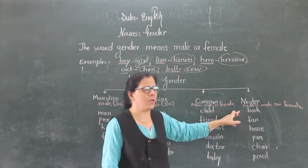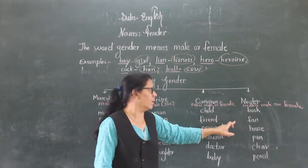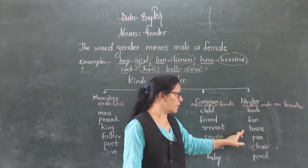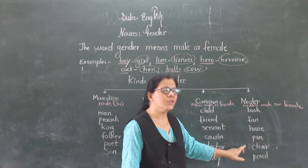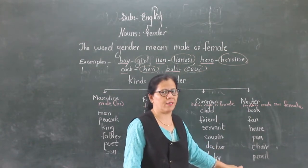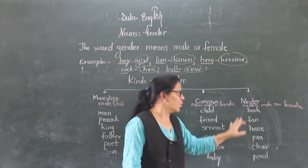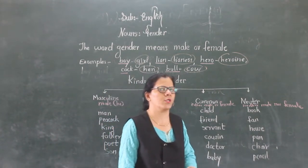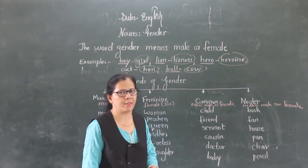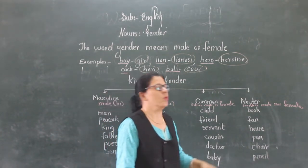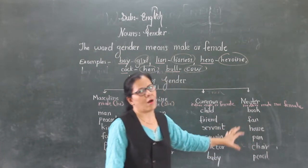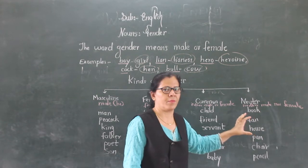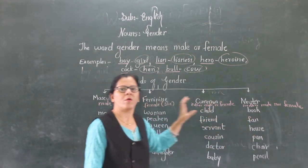For example: book, fan, house, pan, chair, pencil. For these we can't use he or she. Can you say 'he book' or 'she book'? No — we say 'it'. So these are nouns which are in neuter gender. So what have we learned? Gender means male or female. There are four types of genders.